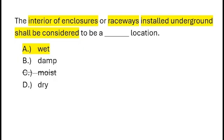Did you guess that right? Let me know in the comments. So why does the NEC classify this as a wet location? Moisture can enter raceways due to condensation or groundwater, and the conductors themselves must be rated for wet locations to prevent insulation breakdown. Proper sealing and drainage are critical to avoid corrosion and potential electrical hazards from insulation failure. If you like this content, be sure to like, comment, and subscribe, and look out for another episode coming out soon.